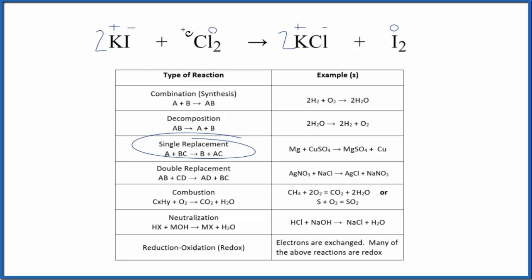For the chlorine, we start out as the free element zero. We go to negative one. We've gained an electron. So we're reduced. So this is also a redox reaction where electrons are exchanged.